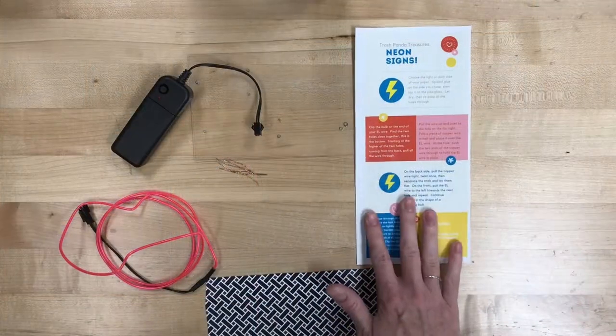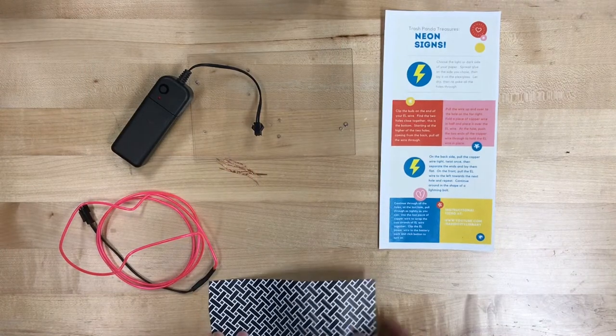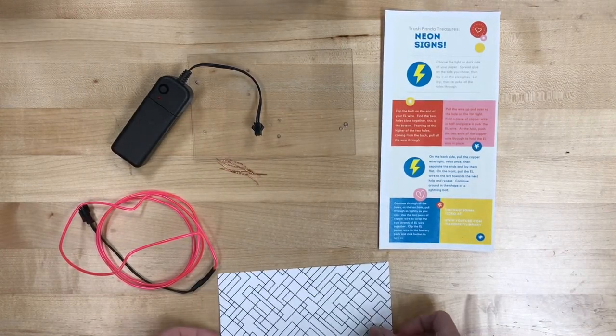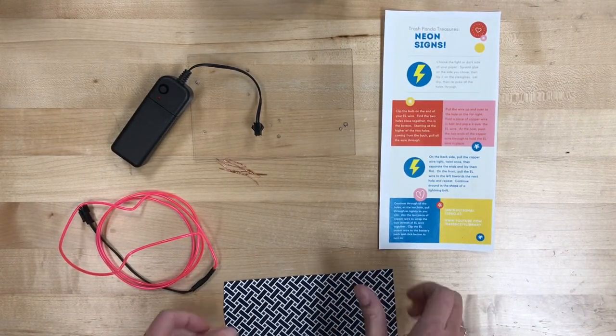Let's take a look, see what you got in your box. Alright guys, let's take a look and see what we got in our box. You should have some paper, dark on one side, light on the other.